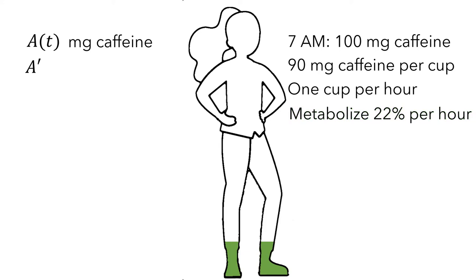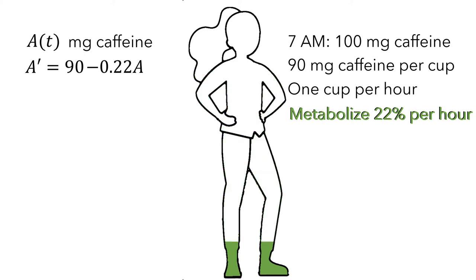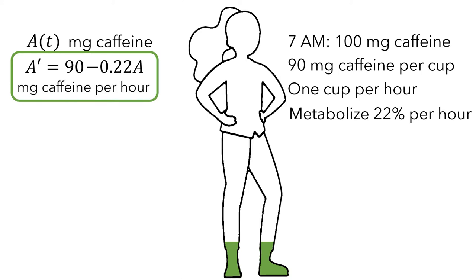For the rate at which the caffeine is changing, we first account for the constant rate of increase by including a constant term in the differential equation. This constant term represents the constant rate of 90mg per hour. Then, since metabolizing involves removing caffeine, this corresponds to a negative rate proportional to the amount of caffeine that is left. So we subtract 22% of A to represent this changing rate. This differential equation models the rate at which the amount of caffeine in Aleema's body is changing, measured in units of mg per hour.